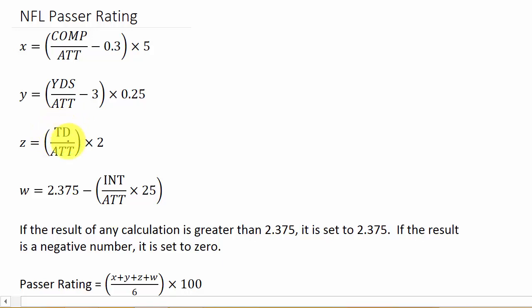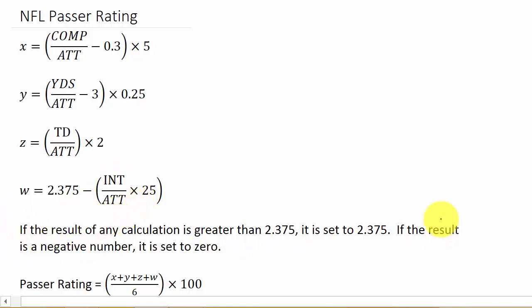Z is the number of touchdowns over attempts, multiplied by 20. Then W is your percentage of interceptions: 2.375 minus interceptions over attempts, times 25.